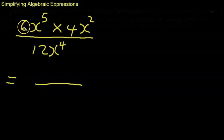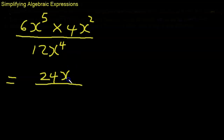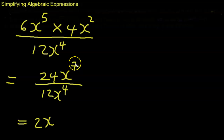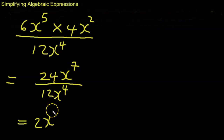Multiply the numbers first: 6 times 4 is 24. Then x to the power of 5 times x squared — when multiplying, add the powers — so that's x to the power of 7. Now we divide by 12x to the power of 4. 12 into 24 goes 2 times. For the x terms, we subtract the powers: 7 minus 4 is 3. So the answer is 2x cubed.